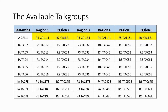ISP 210, this is county comms on R1 CALL 11. Go ahead, county comms. We have a motor vehicle collision on a highway that is blocking traffic and we need extra people. Can you assist? I'm available. Copy that. We're going to patch our off into R1 TAC 12. Copy that. I'll switch to that talk group.